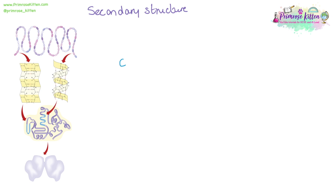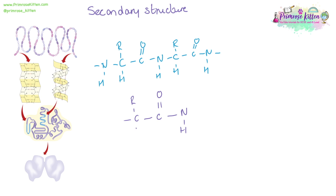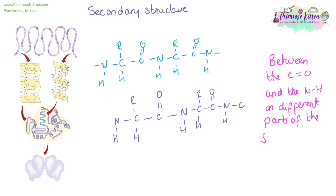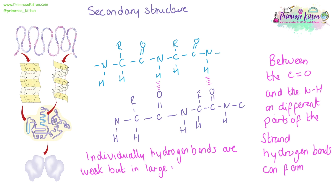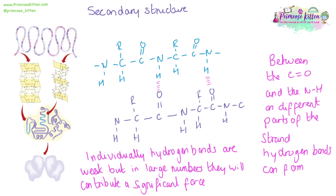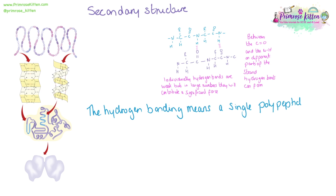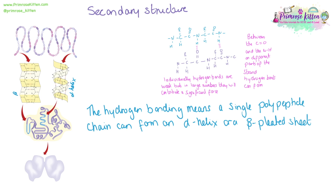The secondary structure starts to get a little bit more complicated. Between the carbon-oxygen and the nitrogen-hydrogen on different parts of the same polypeptide strand, hydrogen bonds can form. You hear about hydrogen bonds a lot, so you should know that individually hydrogen bonds are very weak, but in large numbers they are very strong and can contribute a significant force. The hydrogen bonding means that a single polypeptide chain can form an alpha helix or a beta pleated sheet.